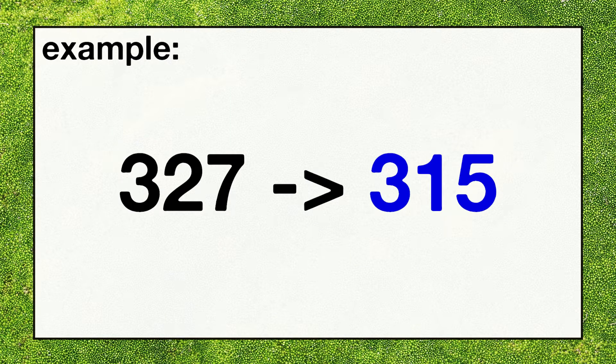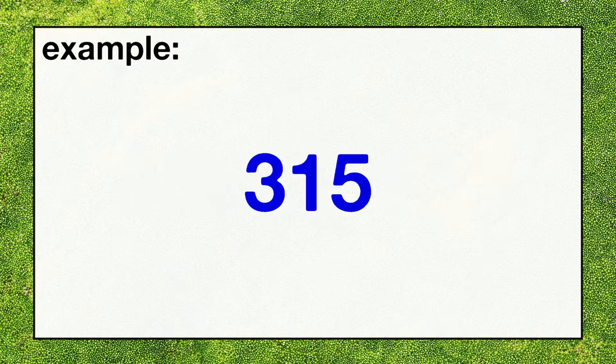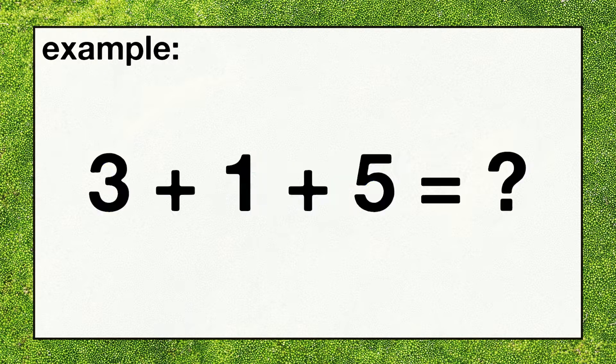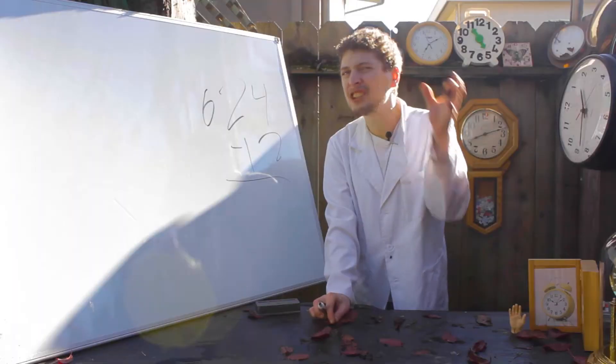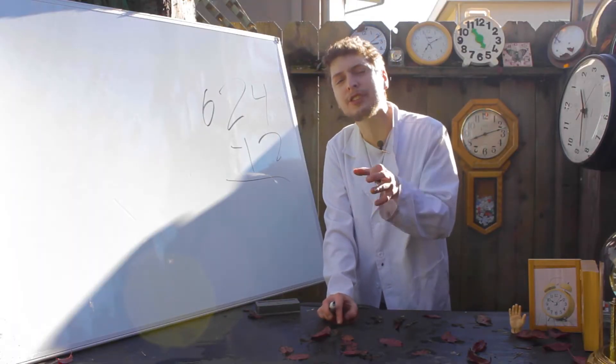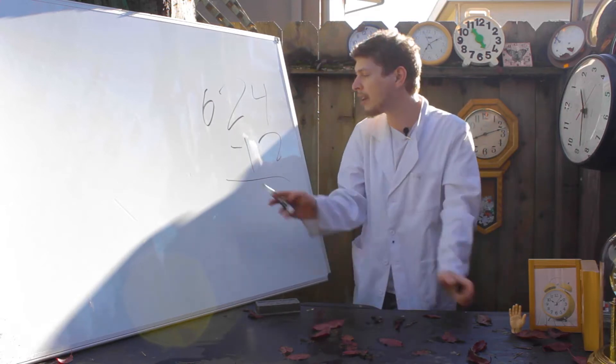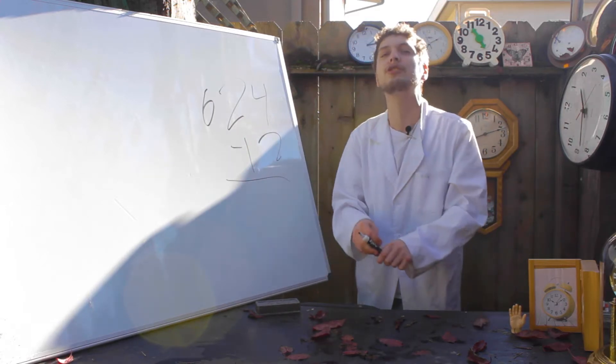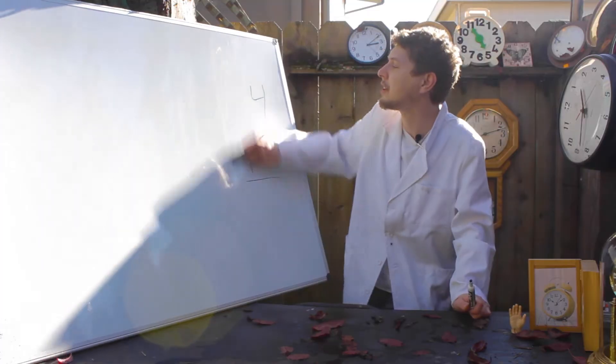But we need an even luckier number, so you are going to now again add the digits of your lucky number. And if it's not a single digit yet, add them again and keep adding up the digits of your result until we're down to one number. And that is your super special lucky number of the episode.